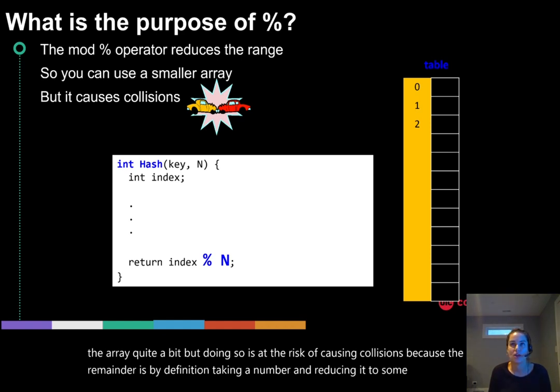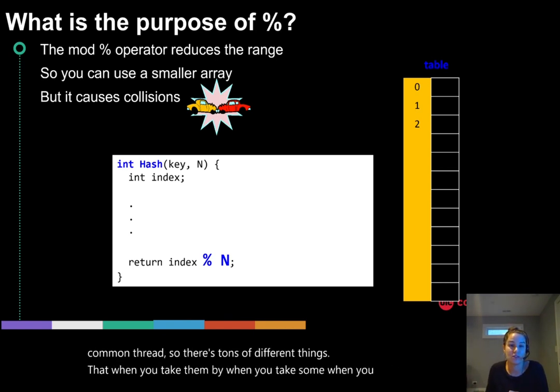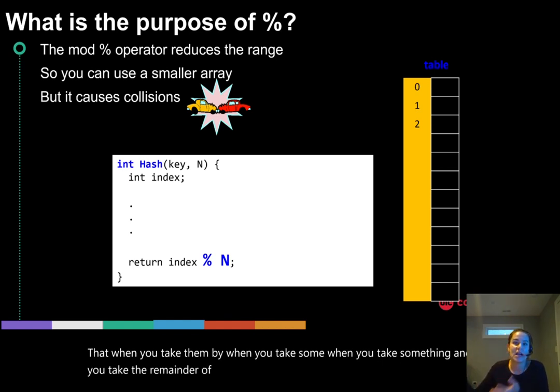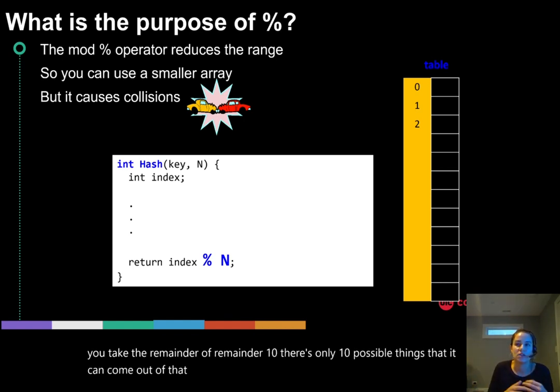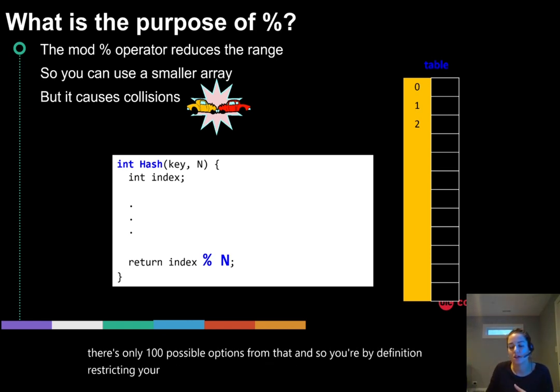But doing so is at the risk of causing collisions because the remainder is by definition taking a number and reducing it to some common thread. So there's tons of different things that when you take them by, when you take the remainder of remainder 10, there's only 10 possible things that it can come out of that. If you take something and do remainder 100, then there's only 100 possible options from that. And so you're by definition restricting your range to whatever you're modding by.